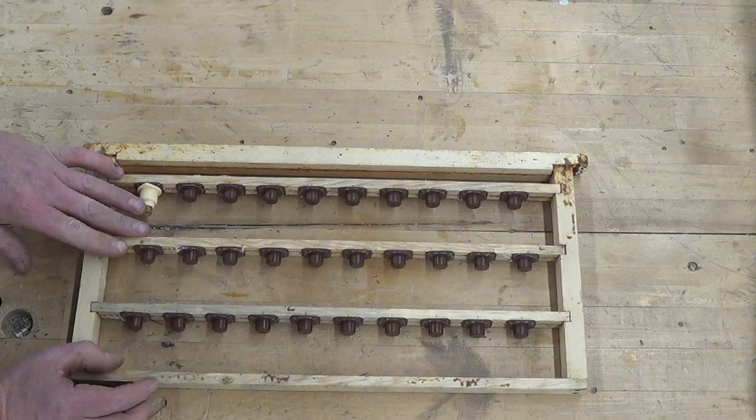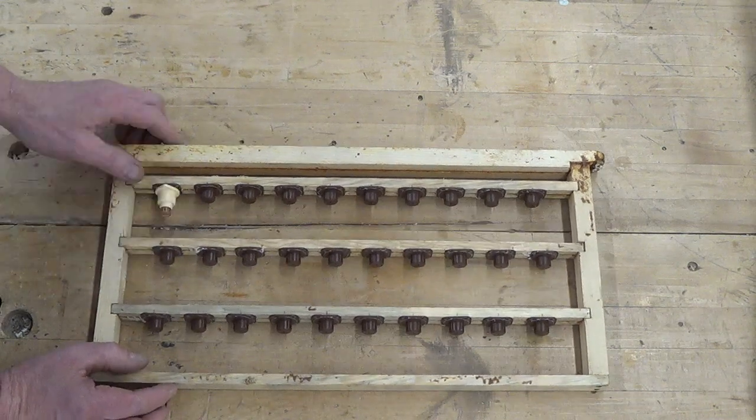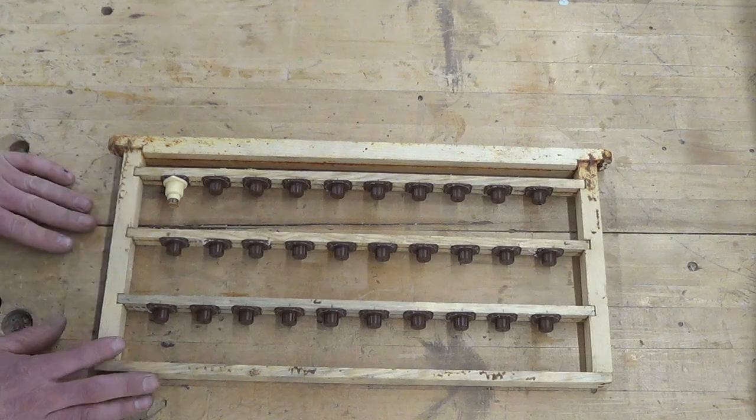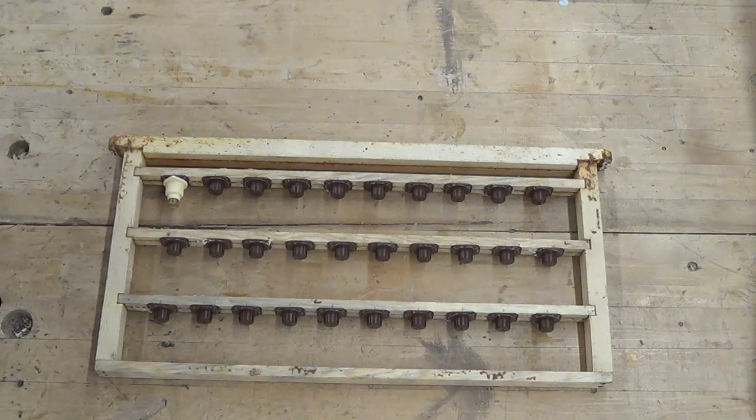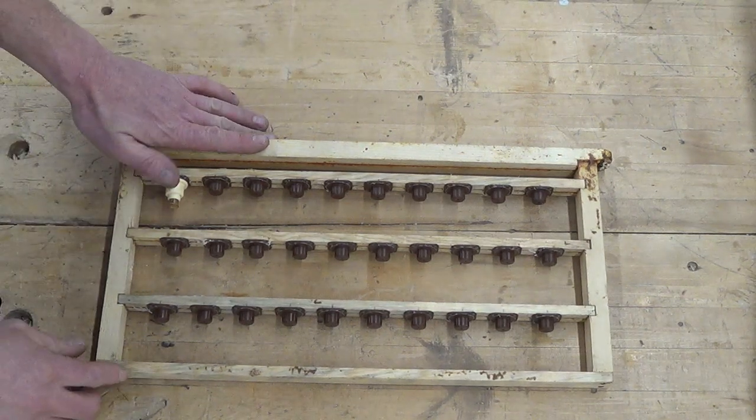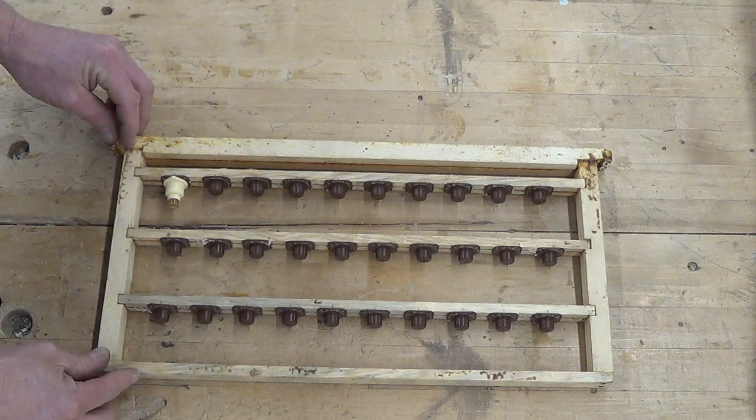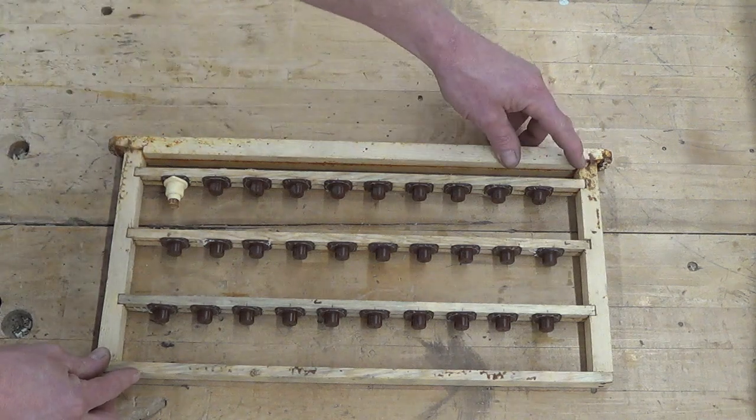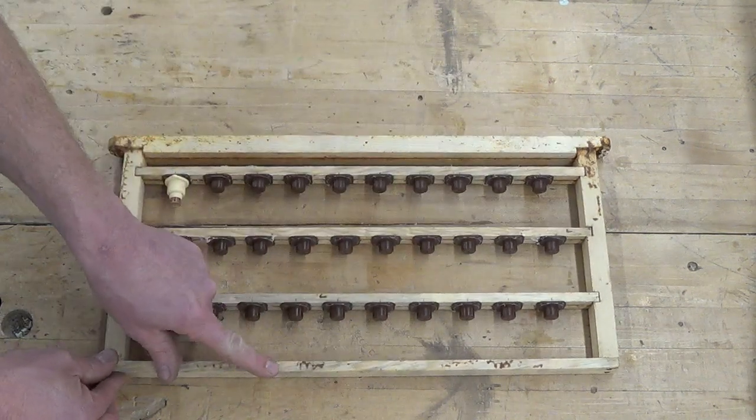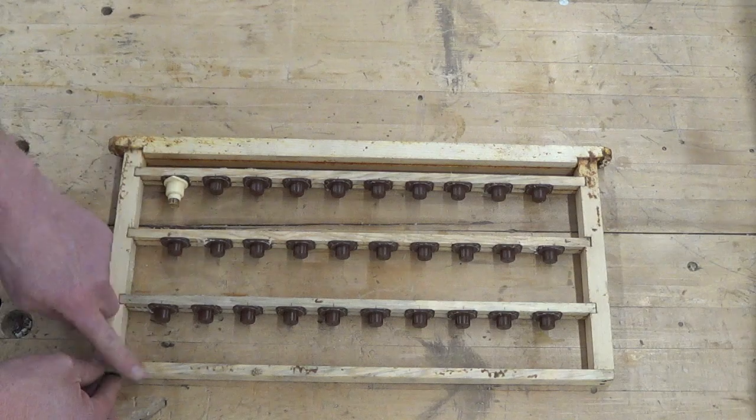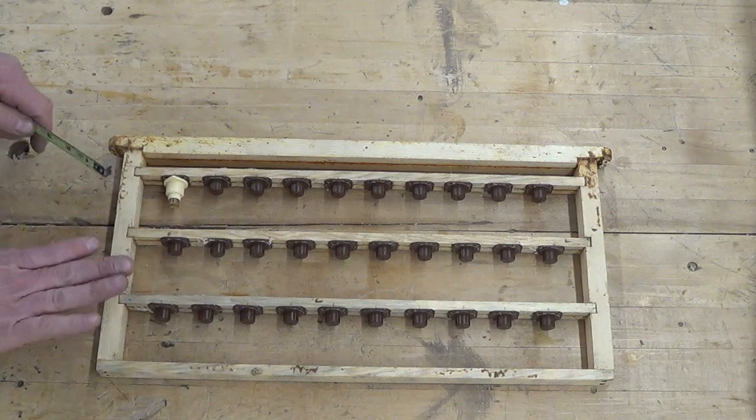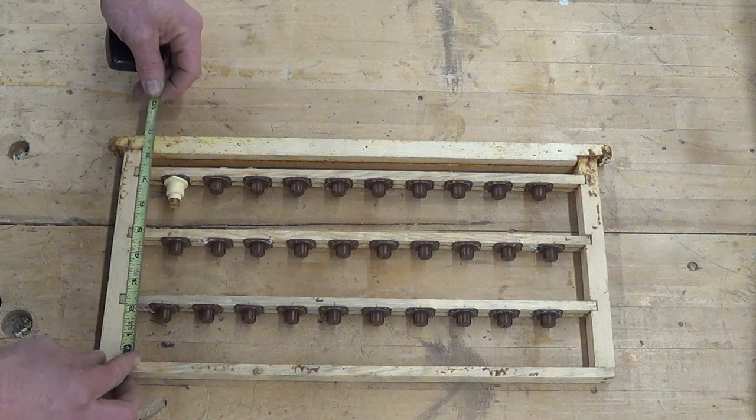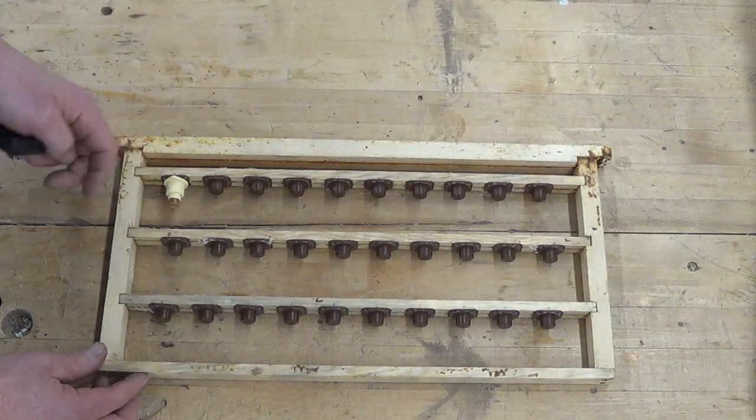I can do 30 graphs with the way I have this set up here. Works out real well for me. So I use a standard top bar that I make. Instead of the notch being 3 eighths of an inch wide, I widen it out to 3 quarters on both sides. Standard bottom bar. I show how to make these in my other videos. The side piece is 8 and a quarter inches long and it's just a piece of 3 quarter by 3 quarter.